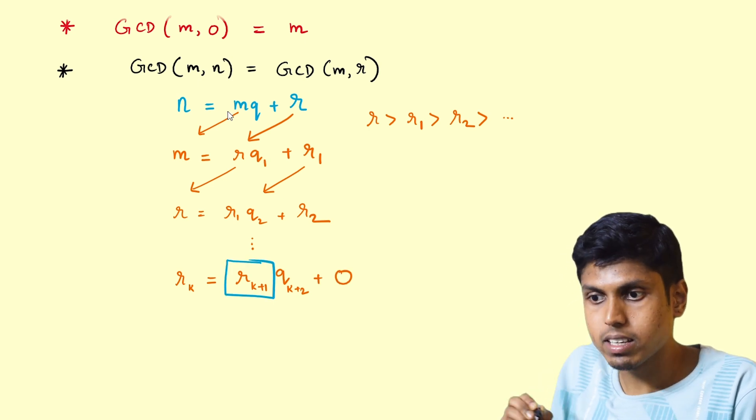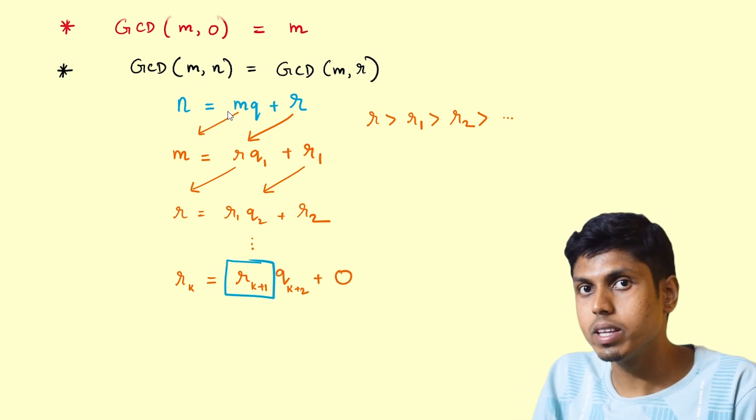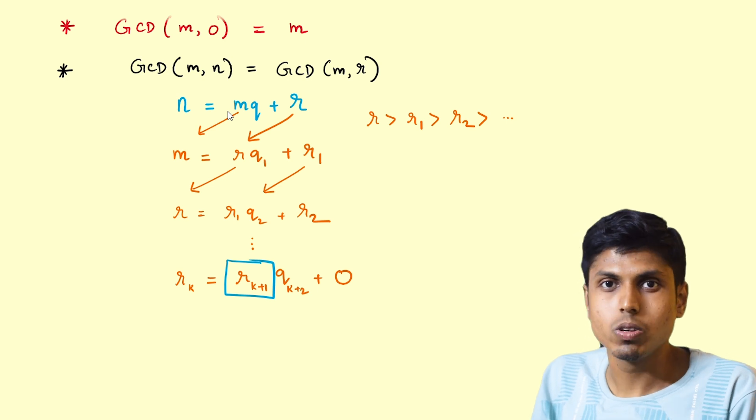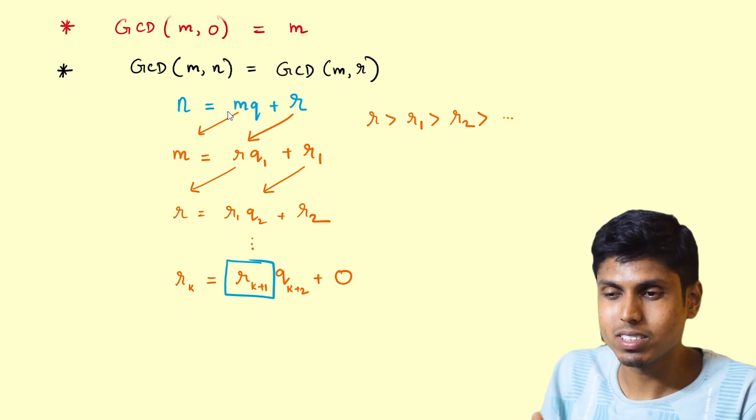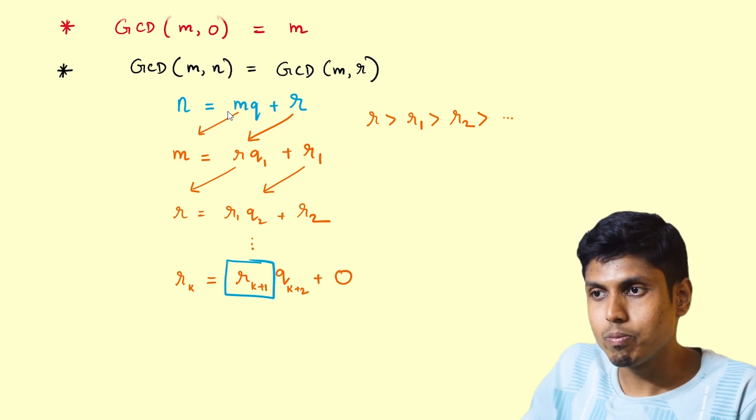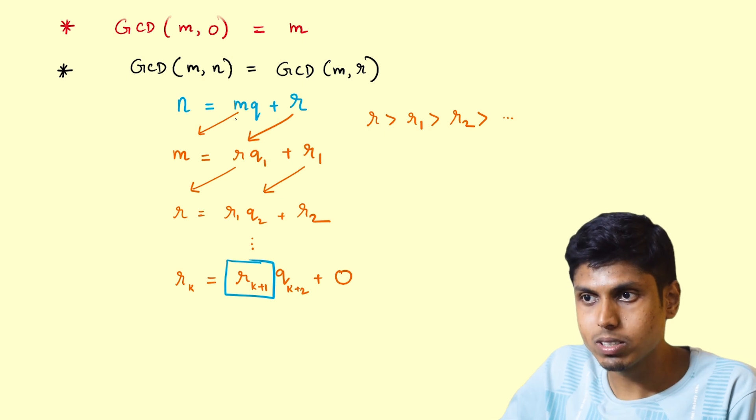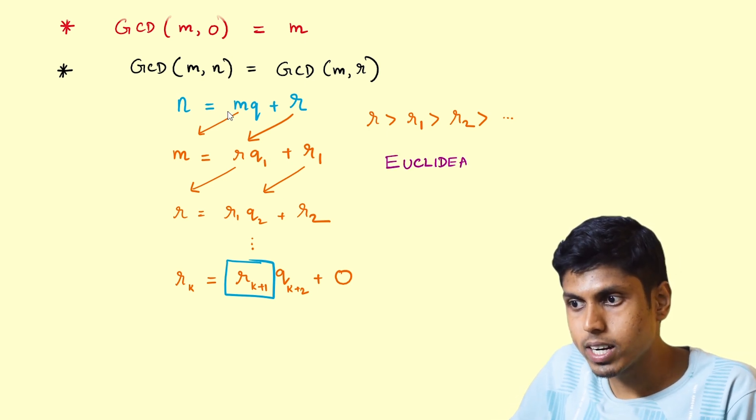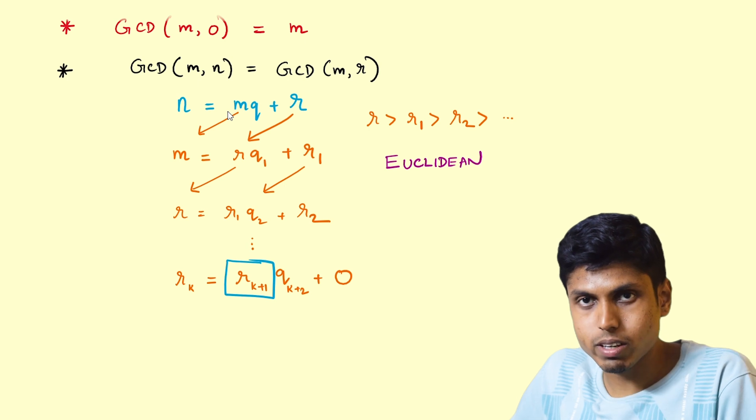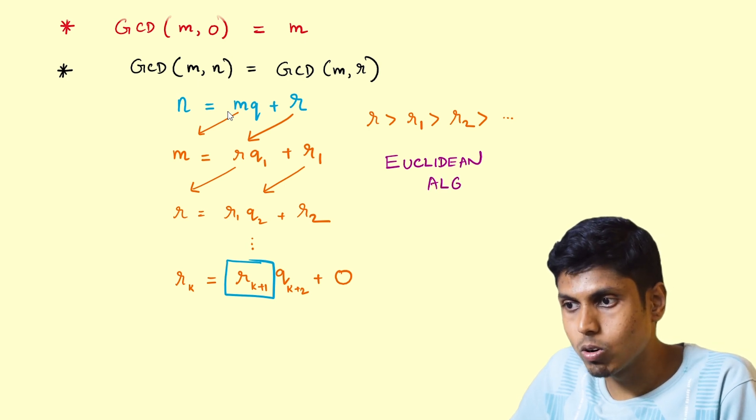And magically the number rk plus 1 will be the GCD of m and n. You would be wondering how come this is the GCD. So people who are not familiar with Euclidean algorithm should know that this process that we did is called the Euclidean algorithm.